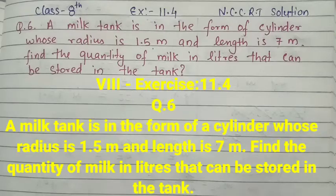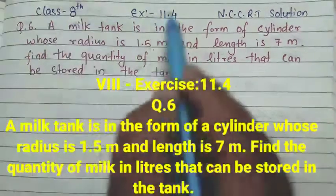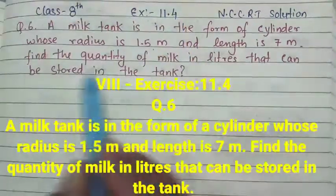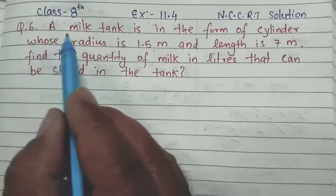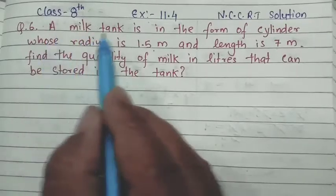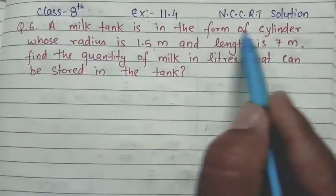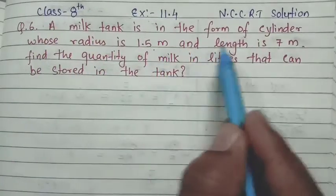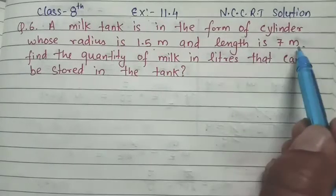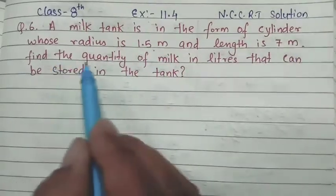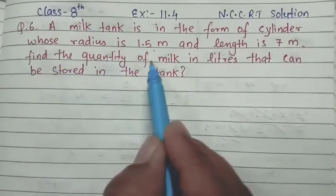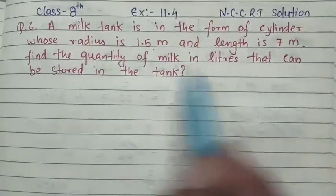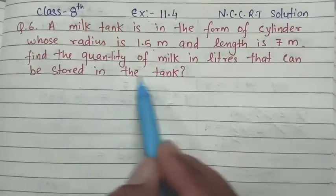Hello everyone, Key for Learning mein aapka swagat hai. Is video mein hum solve karenge Class 8, Exercise 11.4, Question 6. The question is: a milk tank is in the form of a cylinder whose radius is 1.5 meter and length is 7 meter. Find the quantity of milk in liters that can be stored in the tank.